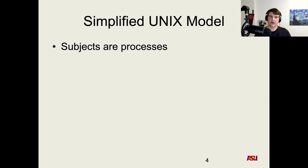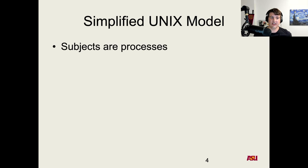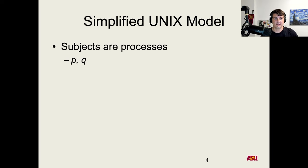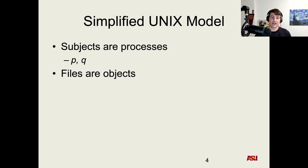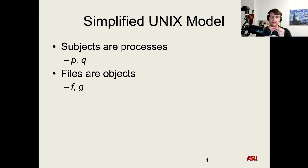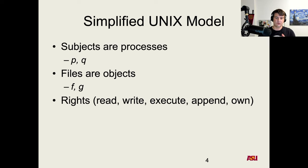In a simplified Unix model, subjects are processes. This may surprise you — as a user you think you take actions, so you're the subject — but to the system, you don't actually exist. What the system cares about is processes, each with a unique user ID that has rights on objects. In our simplified model, P and Q are our subjects (processes), and F and G are our objects (files). We won't consider processes as objects here.